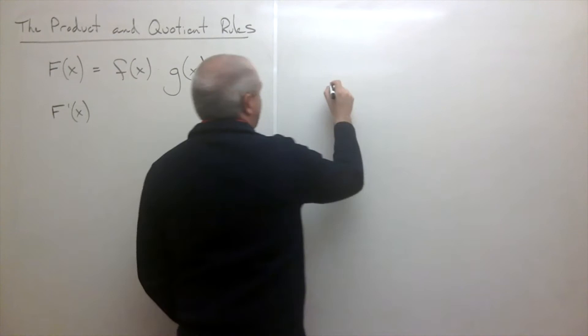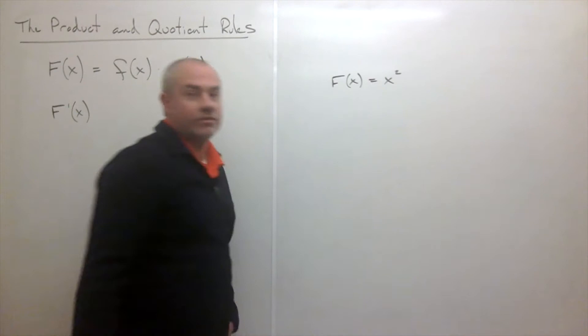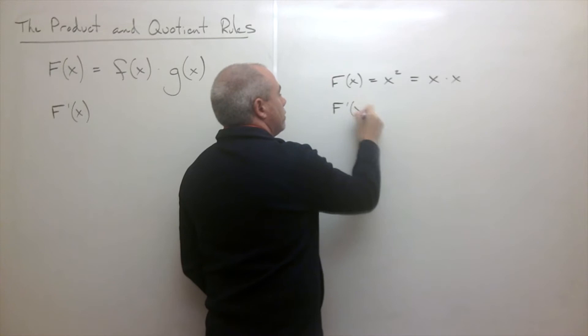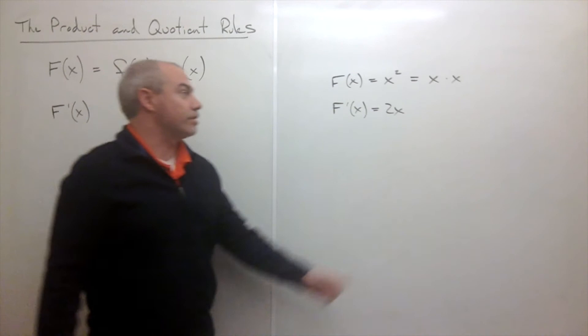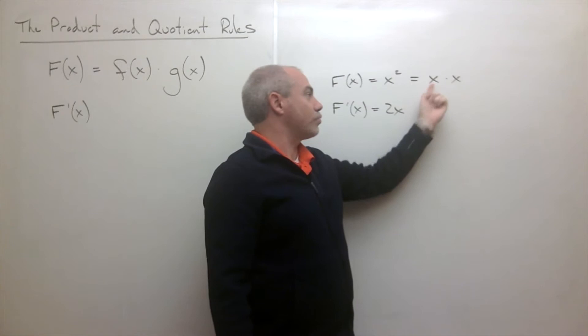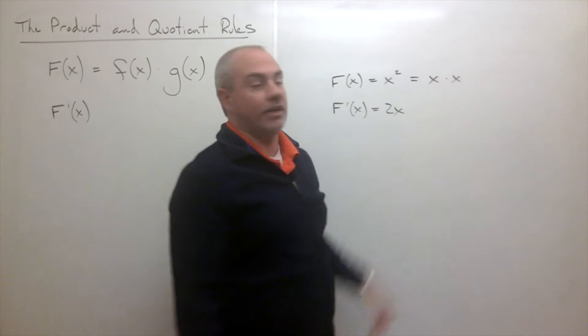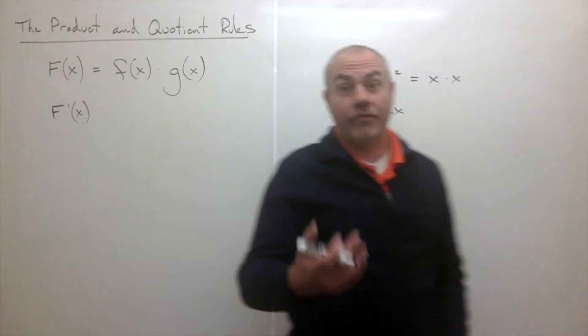A very easy example: let's say capital F of X equals X squared, which can also be written as X times X. We know the derivative of X squared is 2X. But if we used our made-up rule and took the derivative of each factor separately, the derivative of X is 1 and the derivative of X is 1, so we'd get 1 — but we know it's 2X. That's wrong. We can't just multiply the derivatives together.